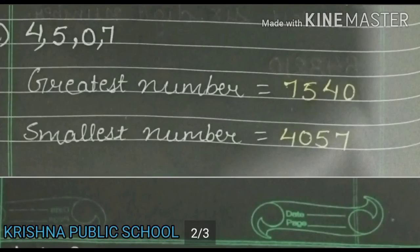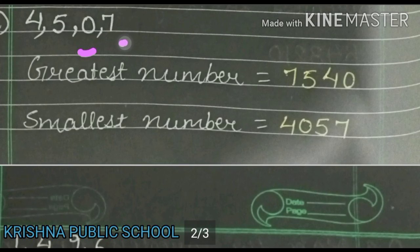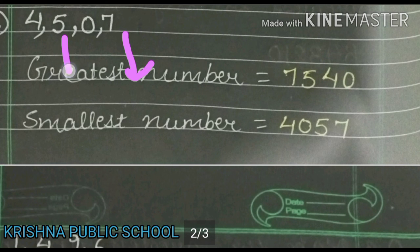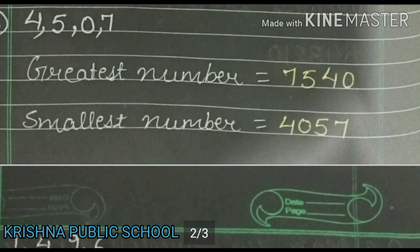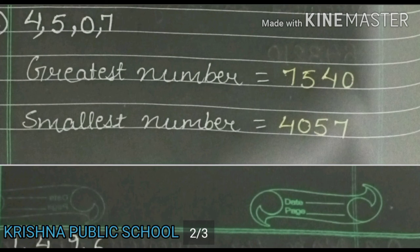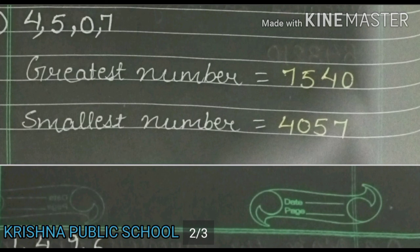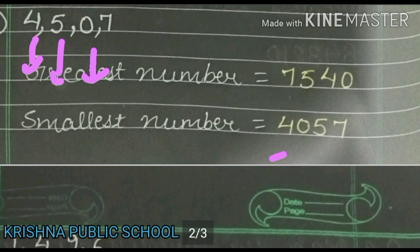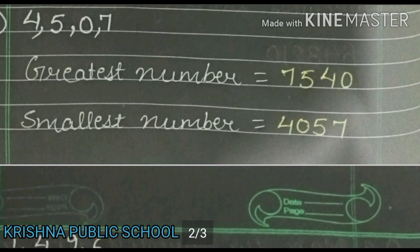Now we see part number C. We have given digits 4, 5, 0, 7. For the greatest number, we arrange in descending order: 7, 5, 4, 0 — so the greatest number is 7,540. For the smallest number, we don't write 0 at the first position because a number never starts with 0. So the smallest number starts with 4, then 0, then 5, then 7 — making the smallest number 4,057.